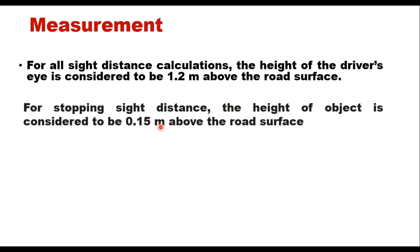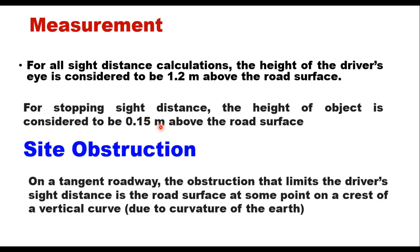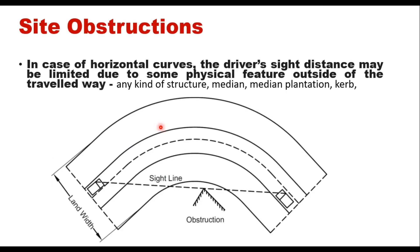This sight distance can be obstructed by many factors. On a tangent roadway, the obstruction that limits the driver's sight distance is the road surface at some point on the crest of a vertical curve, which happens due to the curvature of the earth. In case of a horizontal curve, the driver's sight distance may be limited due to physical features outside of the travelled way.